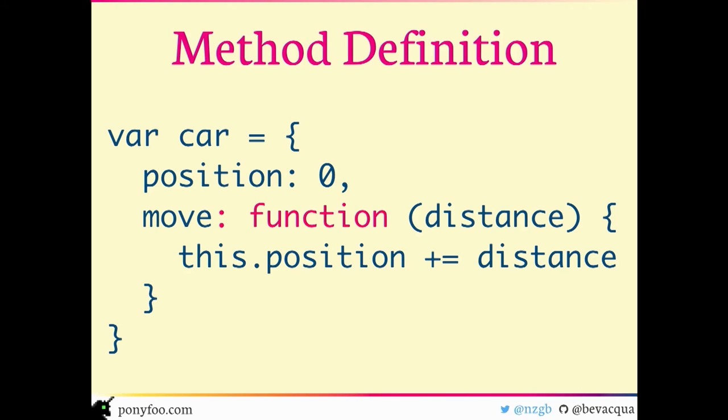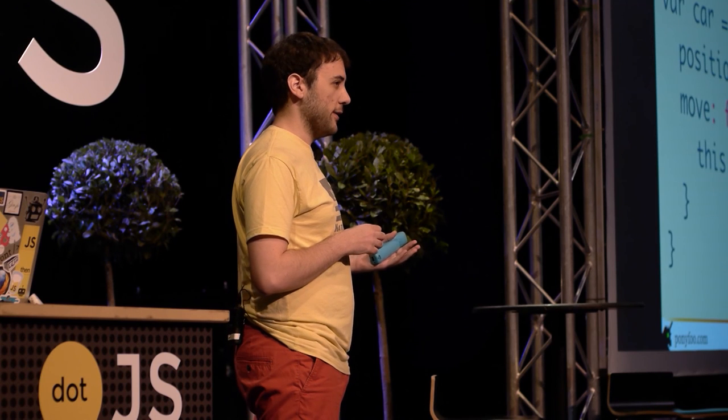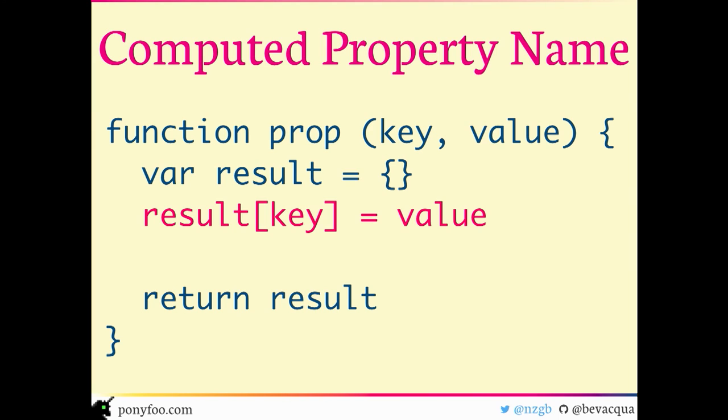The second feature is method definitions, which helps keep your code shorter by not using the function keyword and the colon — similar to when you declare getters or setters using ES5 syntax. Then there are computed property names, which allow you to inline dynamic expressions used as property keys so you don't have to first declare the object literal and then assign to that property. You can do it inline in the object initializer.